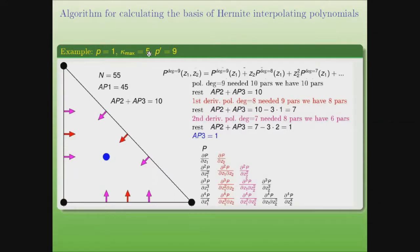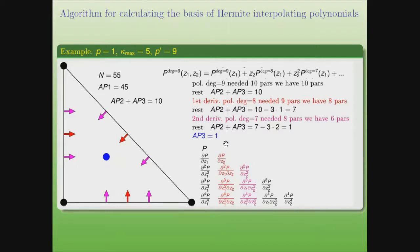We illustrate the algorithm for calculating the basis of Hermite interpolation polynomials with the example κ=p+1, κ=5. This means the conditions for polynomials and derivatives up to third order on each of the three vertices of the triangle are imposed. The polynomial of degree 9 has 55 terms, so the number of auxiliary polynomials is 45, and the conditions for auxiliary polynomials of the second and third types is 10.